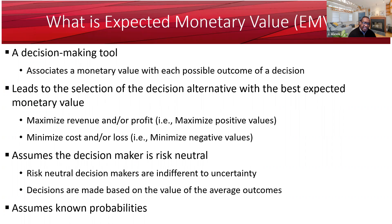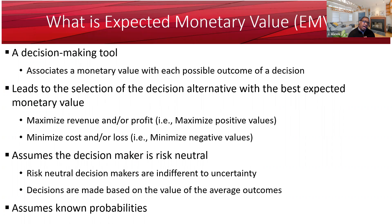There are certain assumptions behind the application of EMV. EMV assumes that the decision-maker is risk-neutral. Risk-neutral decision-makers are indifferent to risk — meaning they are neither risk-averse nor risk-seeking. Decisions are made based on the value of the average outcome. Another assumption behind expected monetary value is that you know the probability associated with each possible outcome.